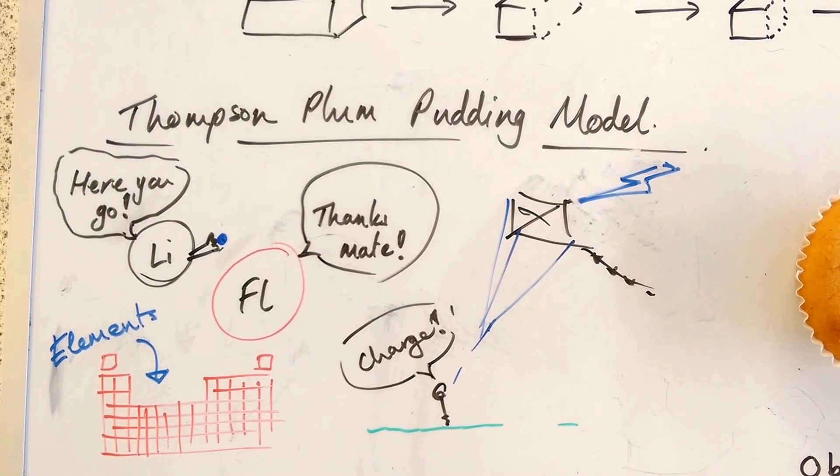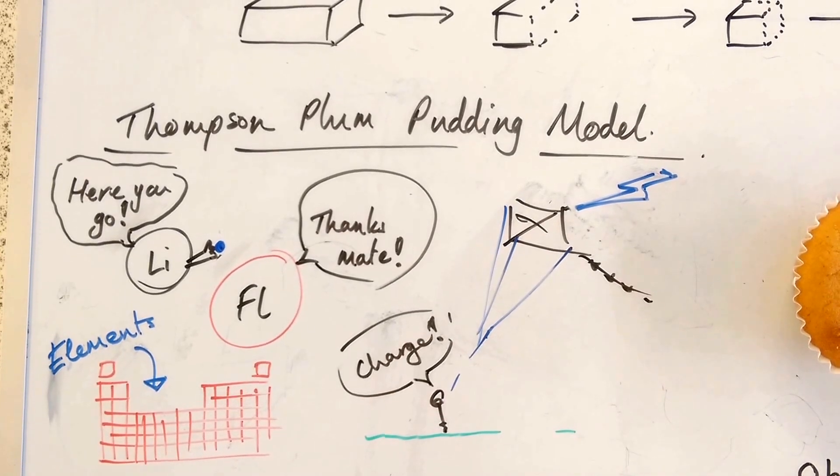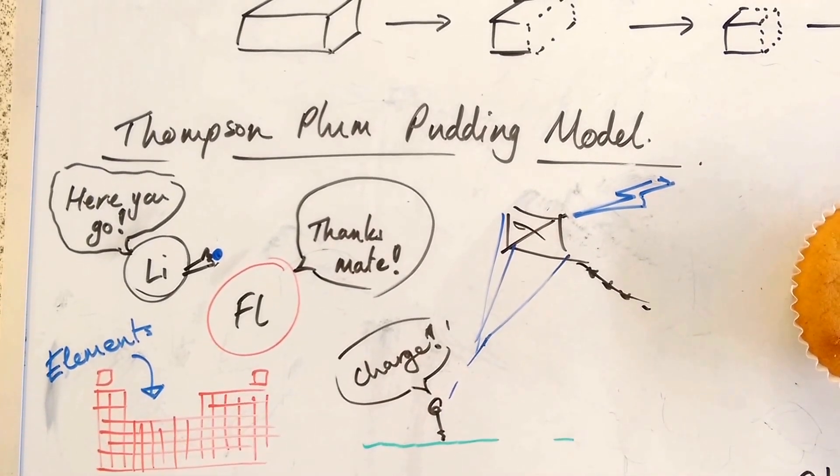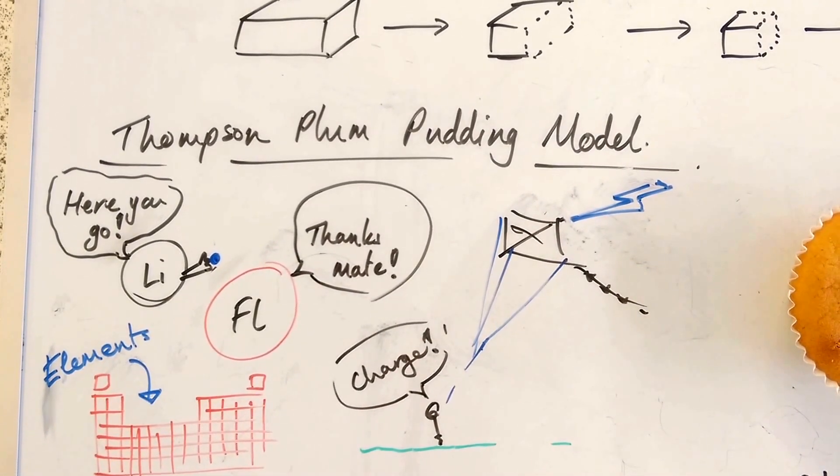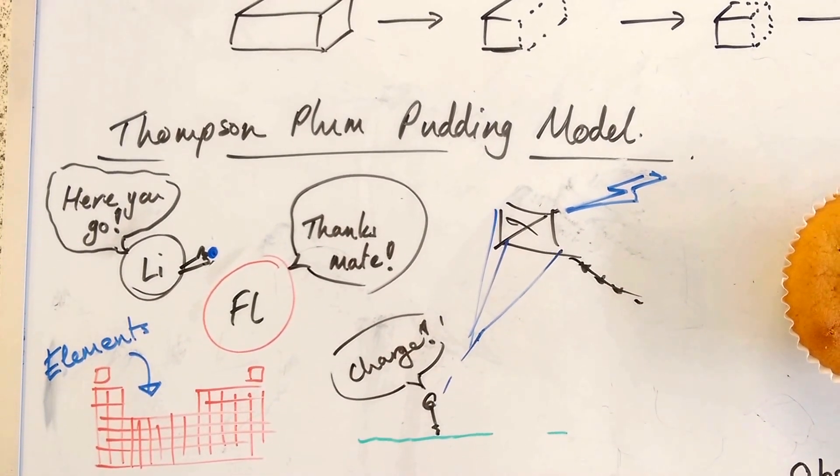Also, another new phenomenon was the idea of electricity. And here you can see Benjamin Franklin getting electrocuted as he flew his kite in a storm.